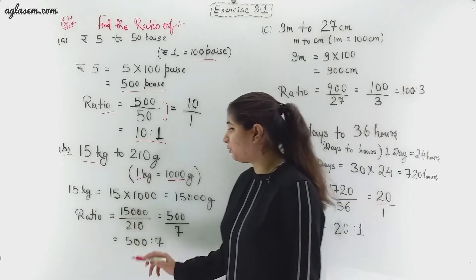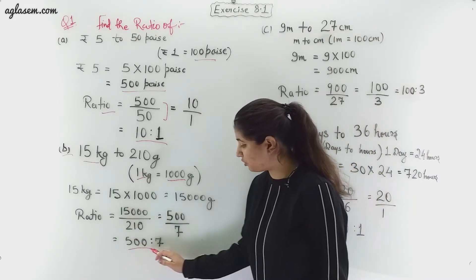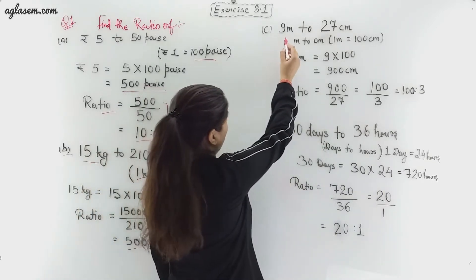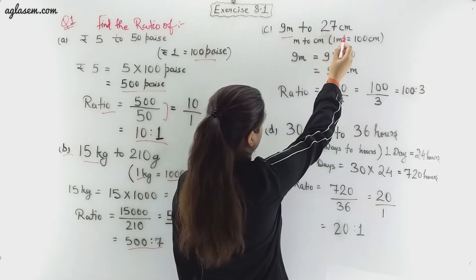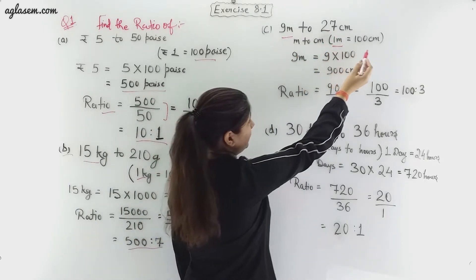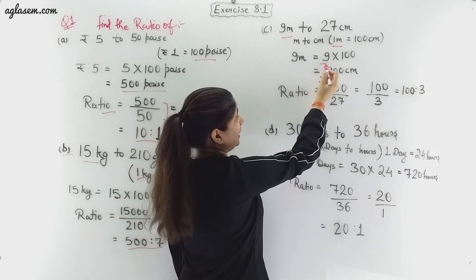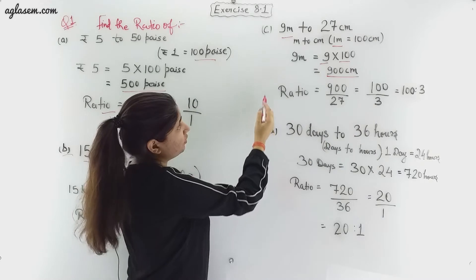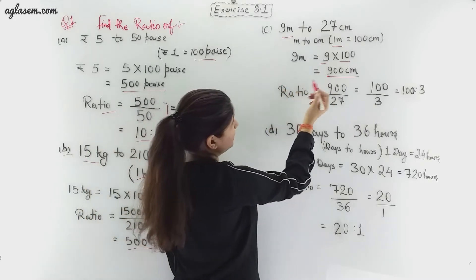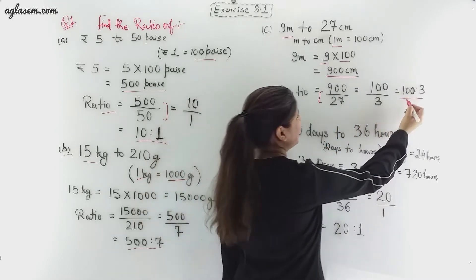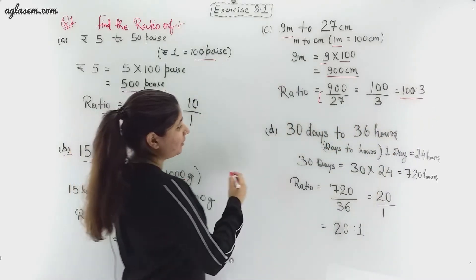Now let's come to part (c). Here we have to find the ratio of 9 meter to 27 centimeter. We know that 1 meter is equal to 100 centimeter. So by multiplying 9 into 100 we get 900 centimeter. To find the ratio of 9 meter to 27 centimeter we have to divide 900 by 27 and we get 100 ratio 3 as an answer.